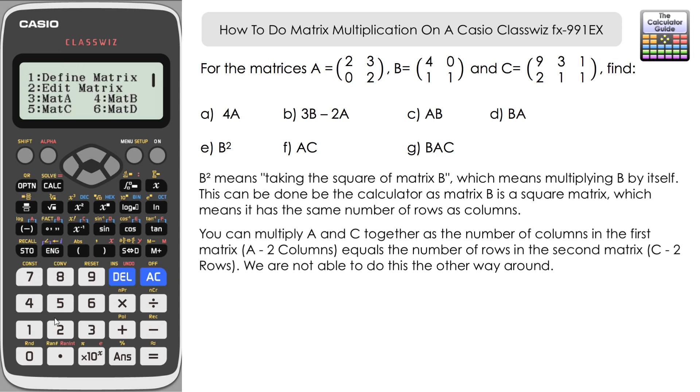Matrix C times matrix A. You can see that we've got a dimension error because the number of columns in C doesn't match the number of rows in A.